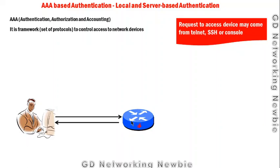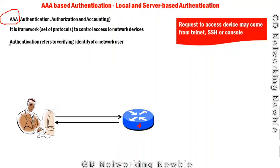The first component of the AAA framework is Authentication. Authentication refers to verifying the identity of a network user. If we are using this AAA framework, it will check the authenticity of the user. When a user wants to access the network, this framework will ask who they are, and the user has to prove their identity.